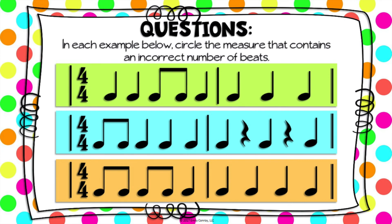Now give it a try with the orange example on the bottom. In the first measure I see a ti-ti, another ti-ti — now we're at two — and a ta. But that only gives us three beats and we're looking for four. So the first measure is incorrect. Let's double check the second measure: one, two, three, four quarter notes — four beats. So the second measure is correct and the first measure is the one that's incorrect.